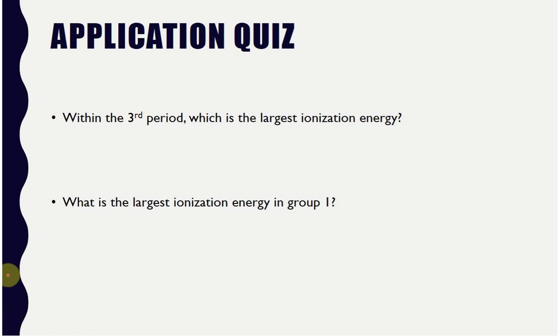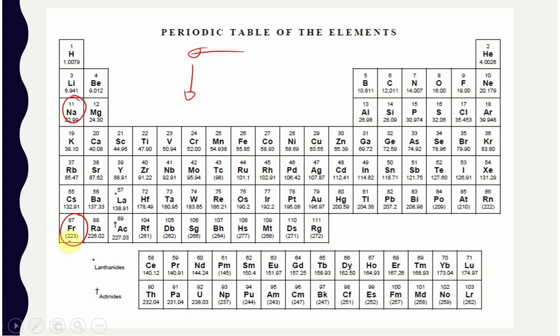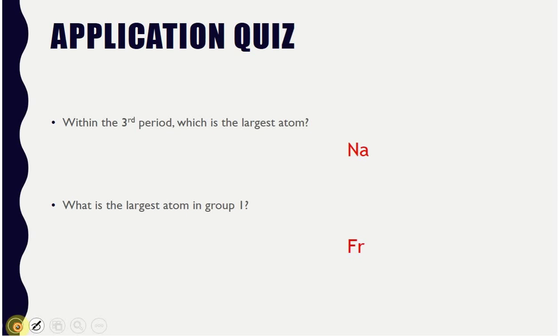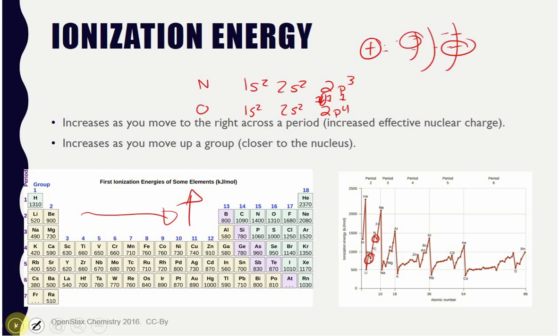So within the third period, which one has the largest ionization energy? And within group one, which has the largest ionization energy? So third period, sodium, magnesium all the way to argon. Ionization energy increases to the right and up. So argon is going to have the highest here. Now if we look within group one, hydrogen, lithium, sodium, potassium, rubidium, francium. Highest up is hydrogen. So hydrogen should have the highest ionization energy there.